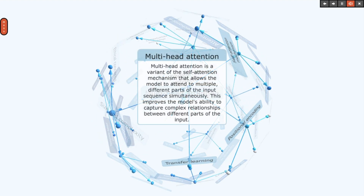Multi-head attention is a variant of the self-attention mechanism that allows the model to attend to multiple, different parts of the input sequence simultaneously. This improves the model's ability to capture complex relationships between different parts of the input.